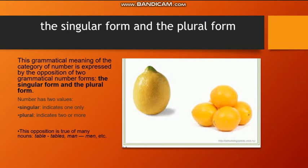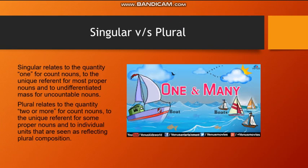This opposition is true of many nouns, for example, table, tables, man, men, and others. Singular relates to the quantity one for count nouns, to the unique reference for most proper nouns, and to undifferentiated mass for uncountable nouns. Plural relates to the quantity two or more for count nouns, to the unique reference for some proper nouns, and to individual units that are seen as reflecting plural composition.